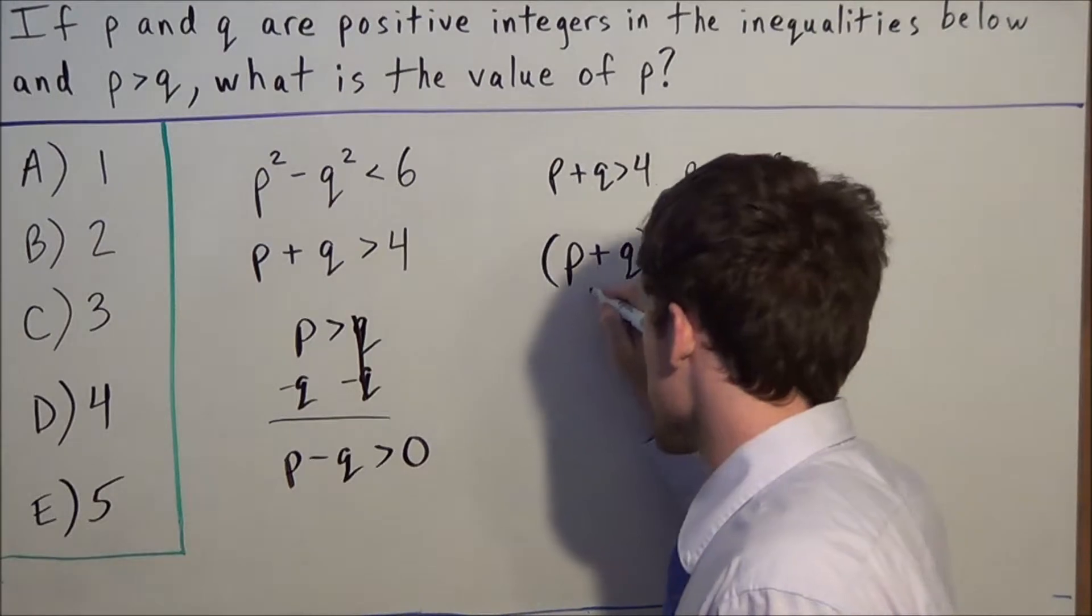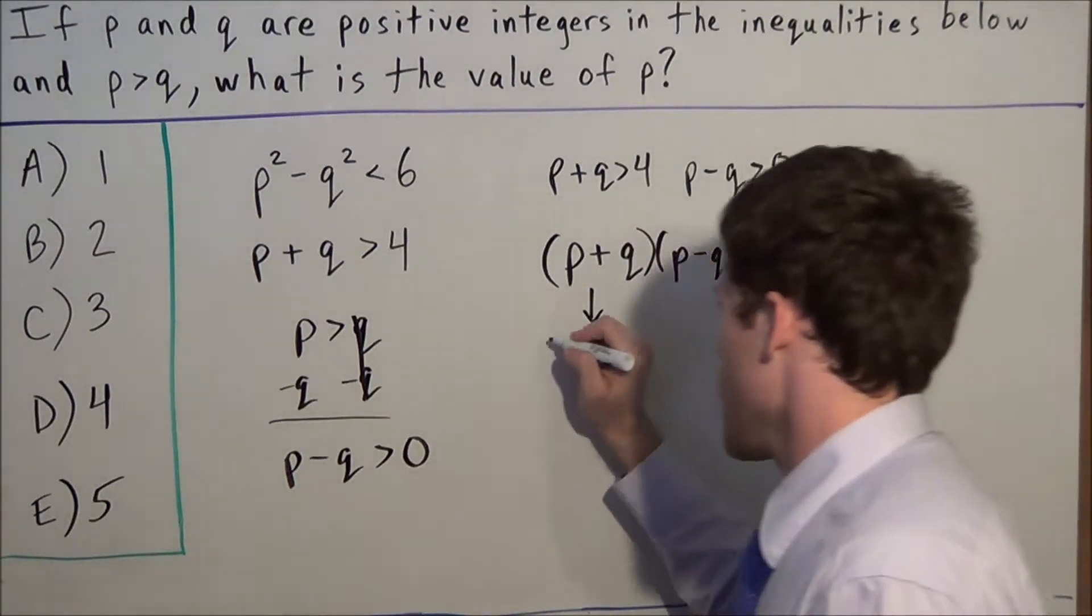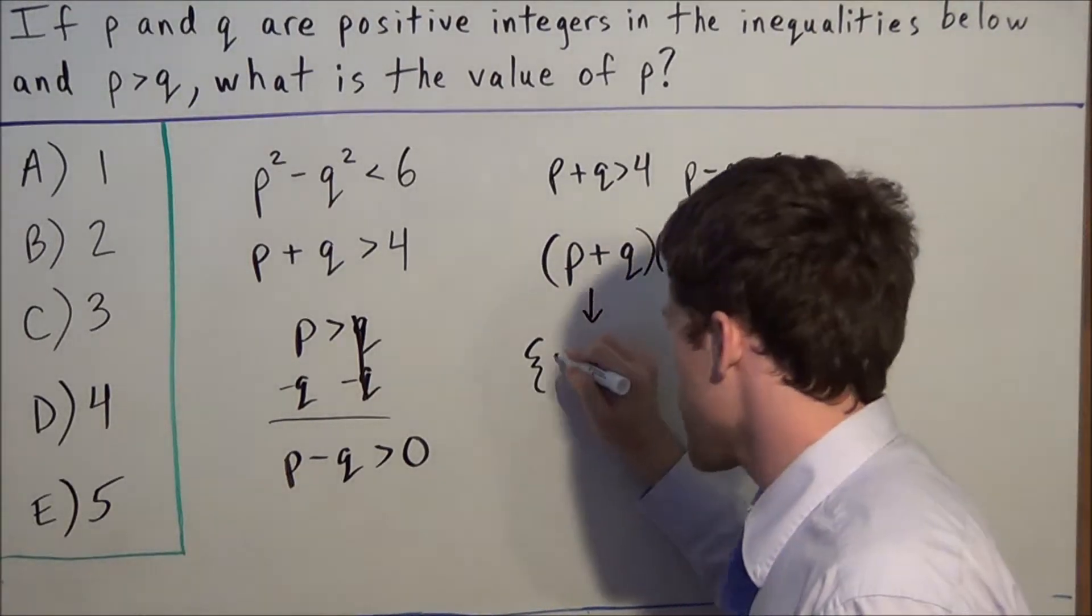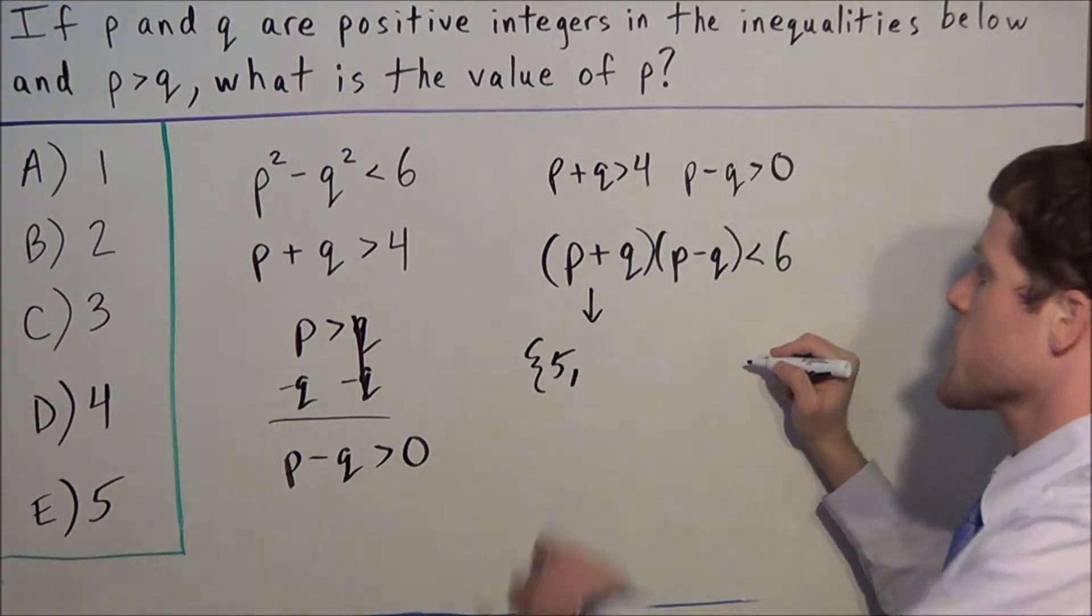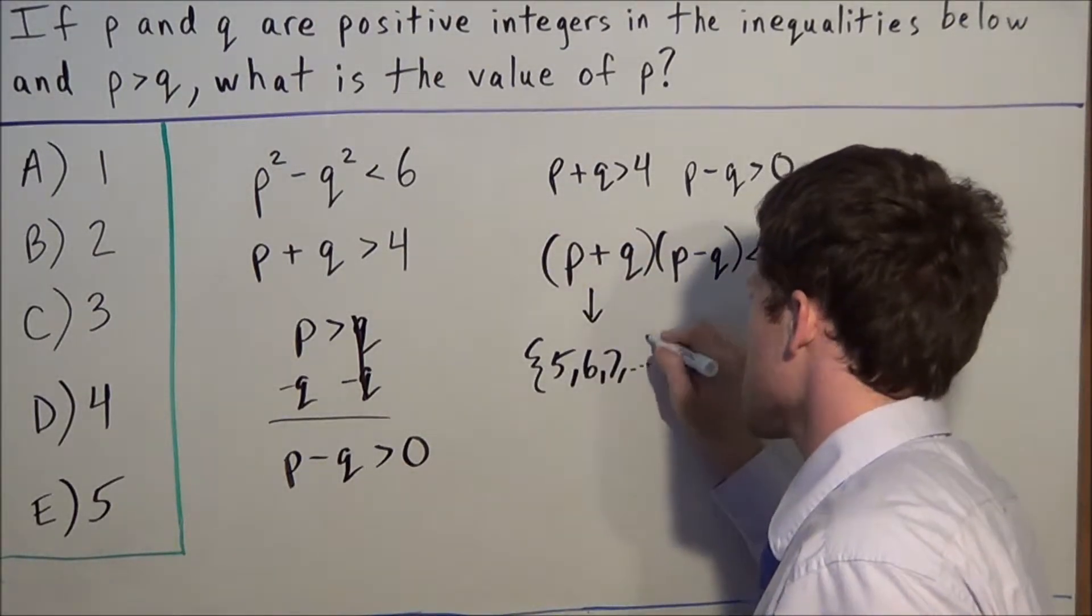Looking at the first factor, p + q has to be greater than 4. Since we're dealing with whole numbers, the first whole number greater than 4 is 5. So potential values for p + q are 5, 6, 7, and so on.